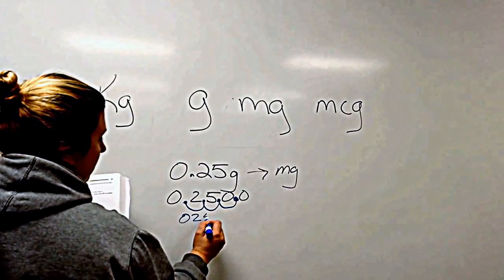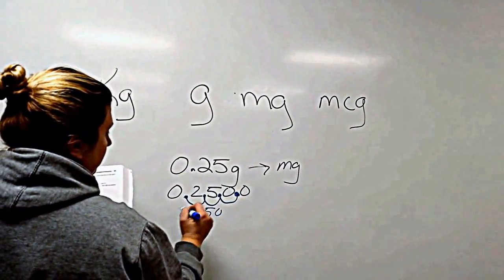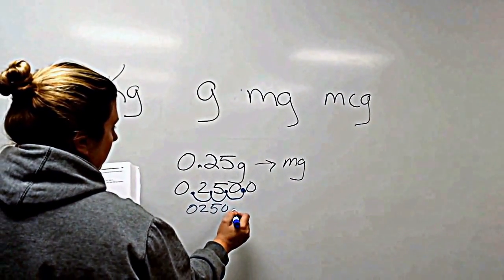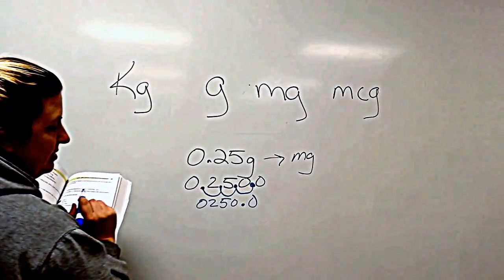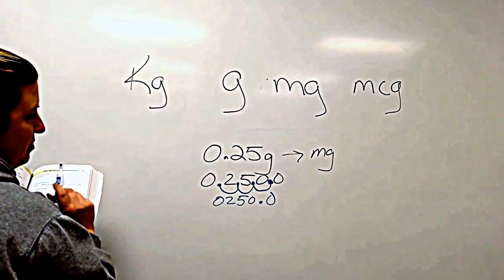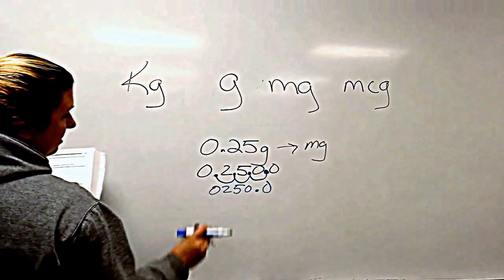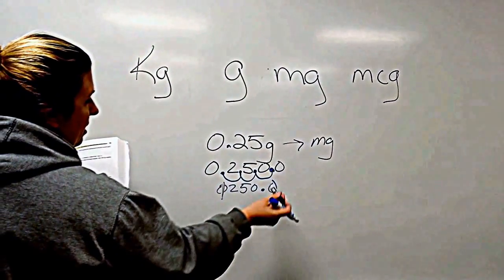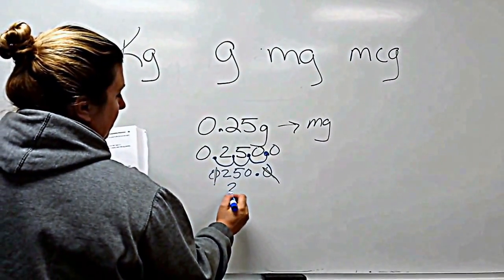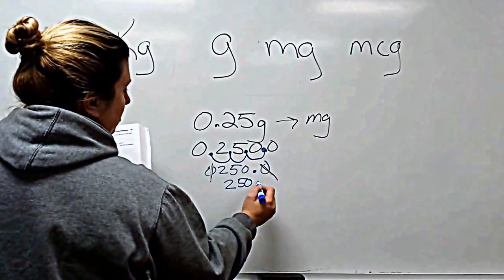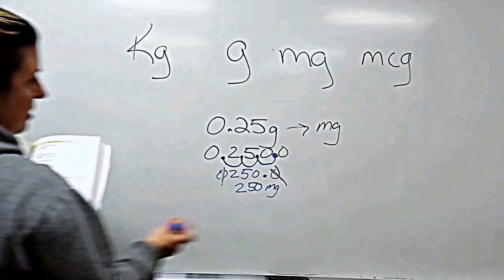So this answer would be wrong if you wrote it this way. Okay, 0.250.0 because zeros never lead and they don't follow. So we would actually drop off the front and the back, and we would come up with 250 milligrams.